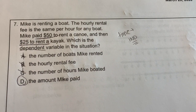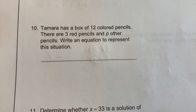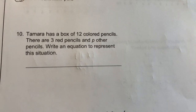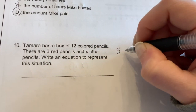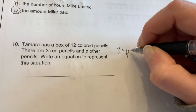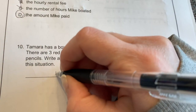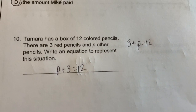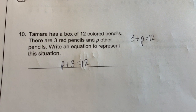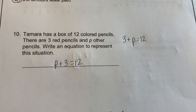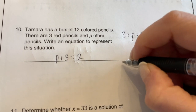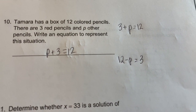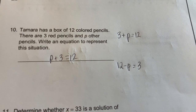Number ten: Tamara has a box of 12 colored pencils — three red pencils and p other pencils. Write an equation: three plus p equals 12, or p plus 3 equals 12. Either is okay because addition is commutative — order doesn't matter. You could also write 12 minus p equals 3, or 12 minus 3 equals p. All of those are technically correct.